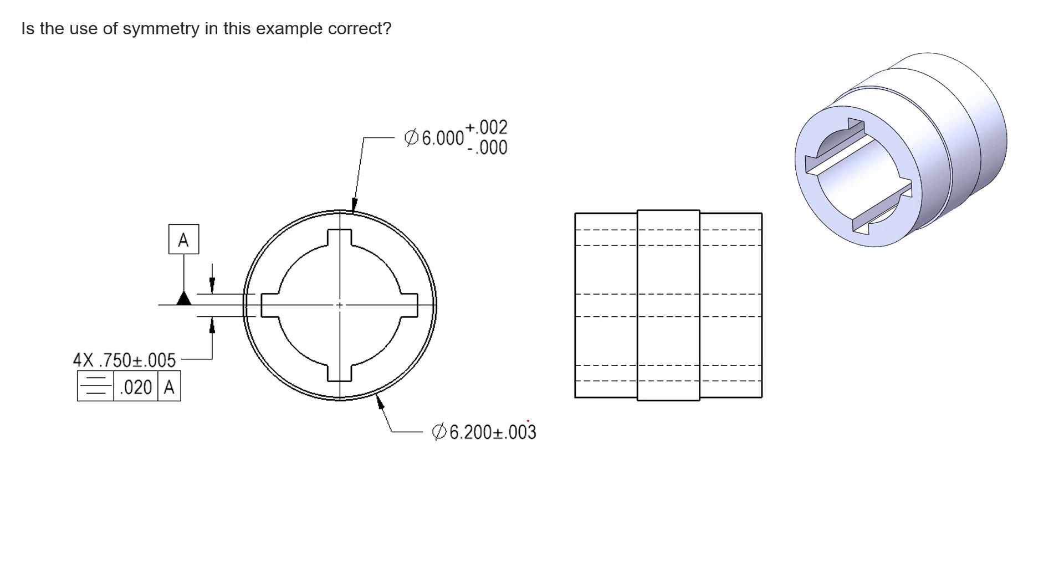So right out of the gate, the first thing I want to point out here is that we have the datum feature symbol attached to a centerline on our drawing. Regardless of what symbol we're using, what tolerances we have going on here, this is a big no-no. We cannot put datum feature symbols on centerlines, axes, anything like that on the drawing, because there's a couple things that can happen.